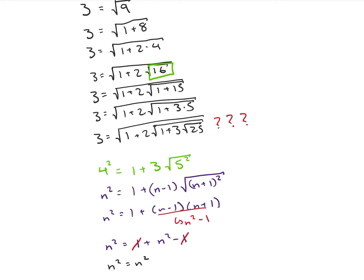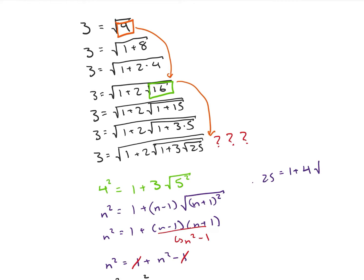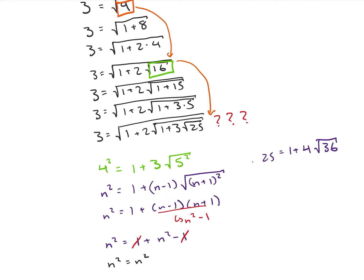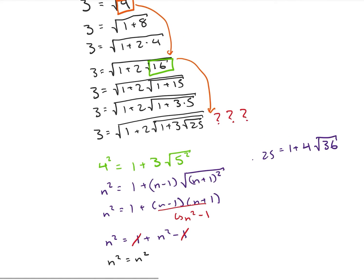It doesn't matter what our n values are. So if we're going from 3 squared and we want to get to 1 plus 2 times the square root of 4 squared — we can do that. We can jump to the next step. It will be true that 25 equals 1 plus 4 times the square root of 36, and we can do that for any number. This nested radical is going to keep moving forward and forward — it turns out this is 100% true.